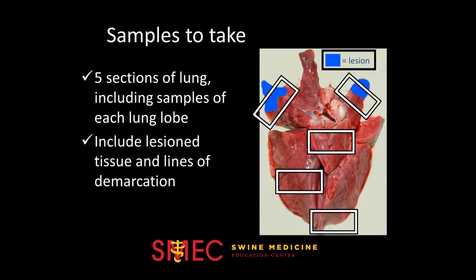Next, get samples of different sections of lung. Again, if an area is lesioned, include both lesioned and non-lesioned tissue. Continue to collect fixed and fresh samples of the heart.